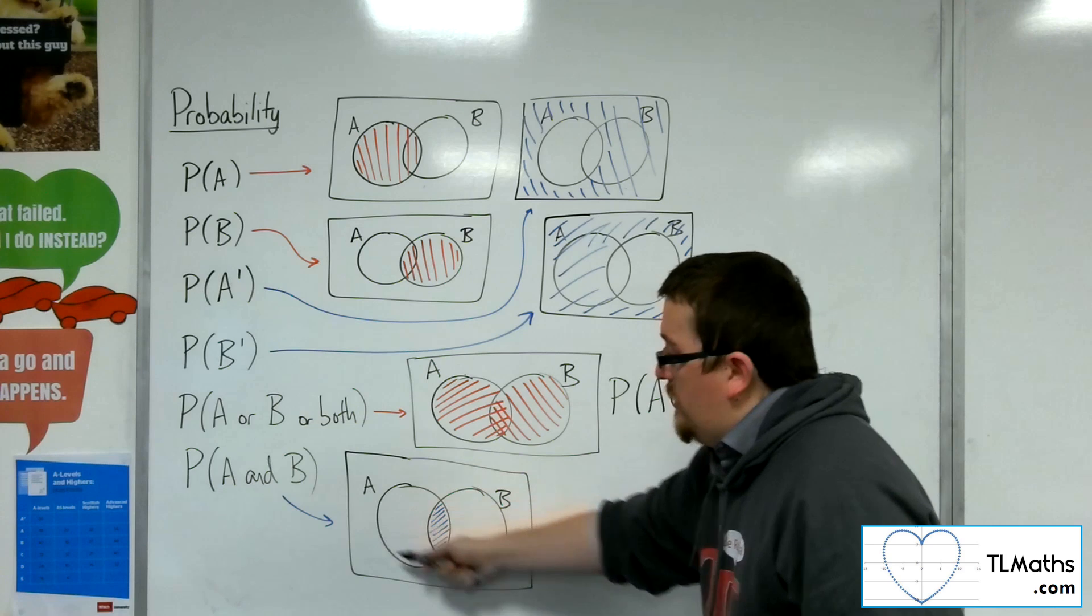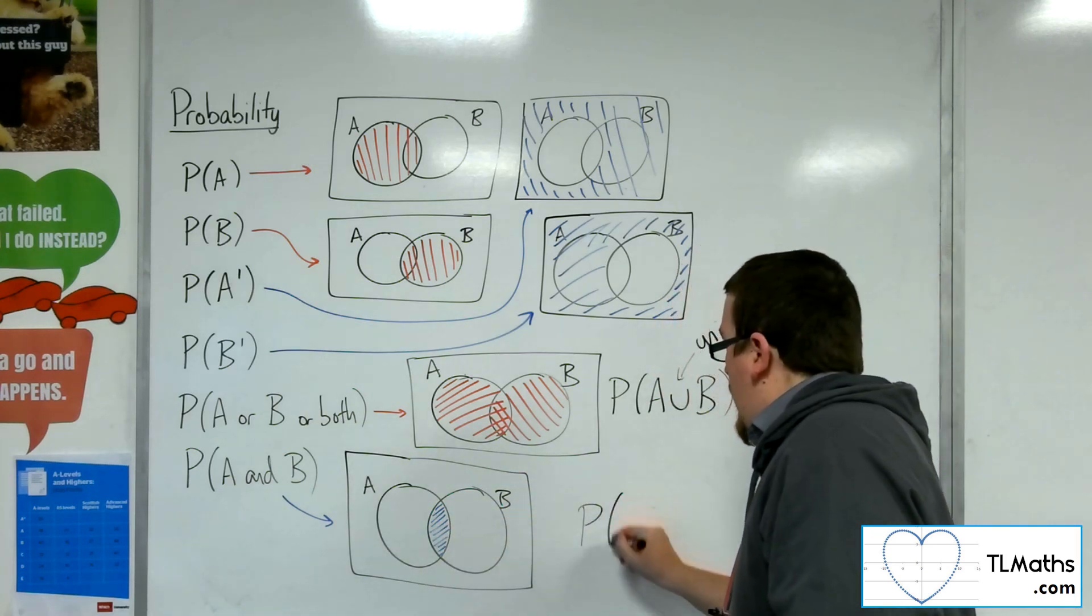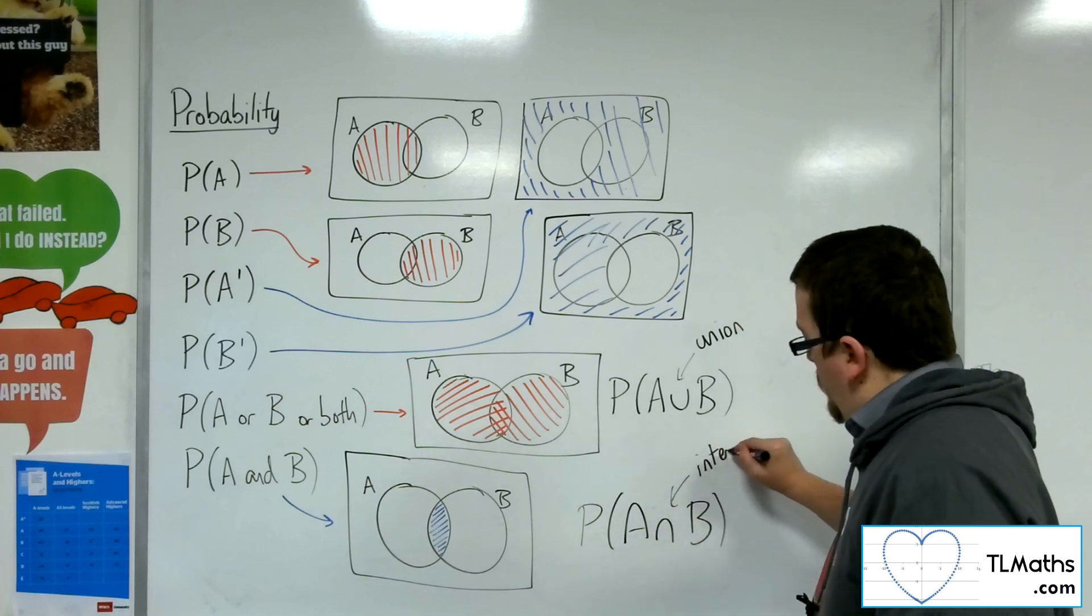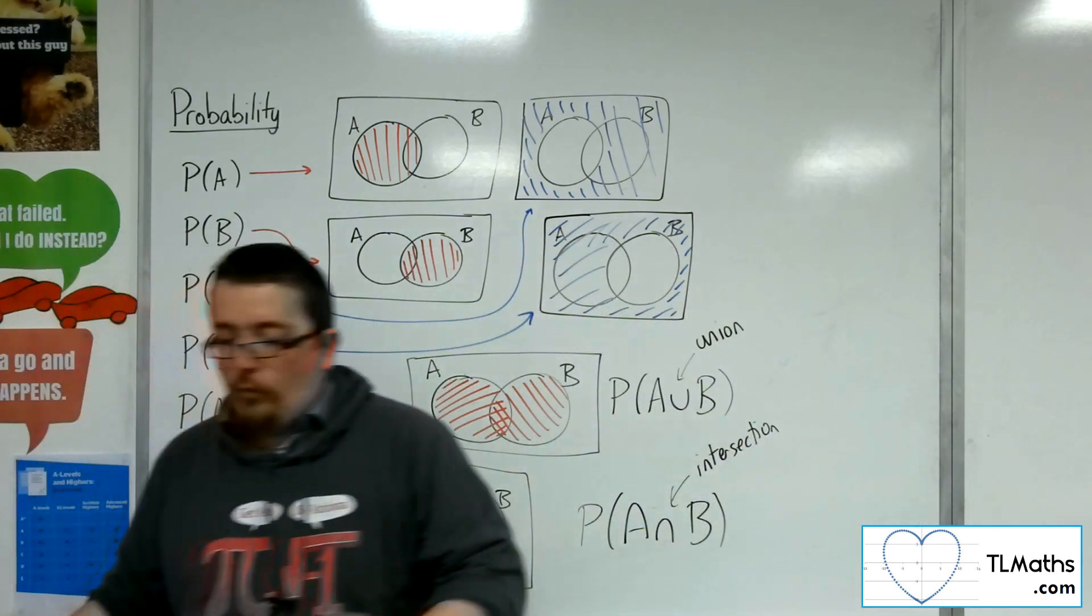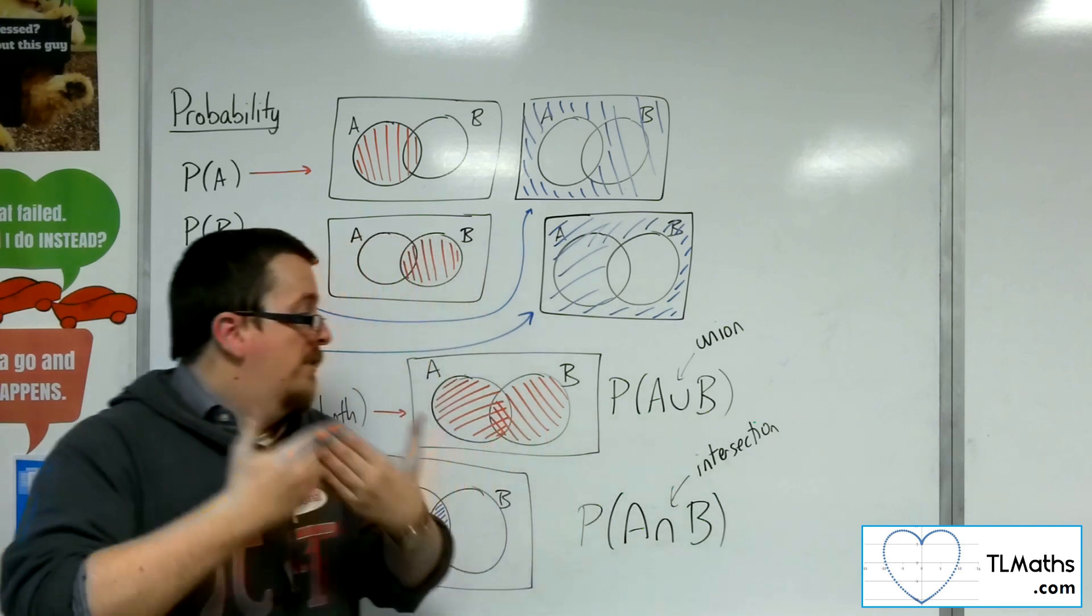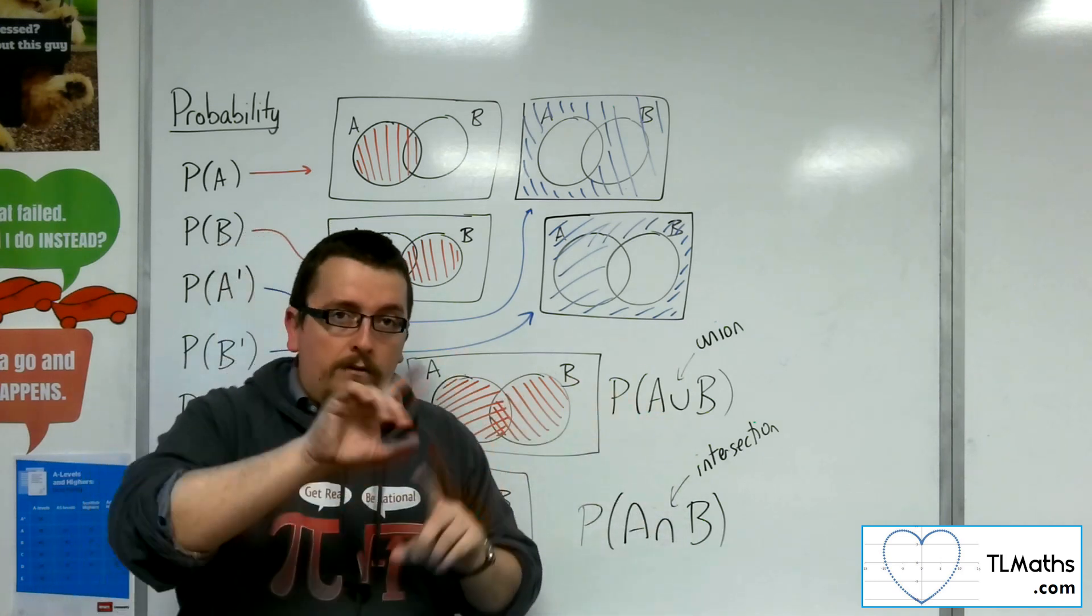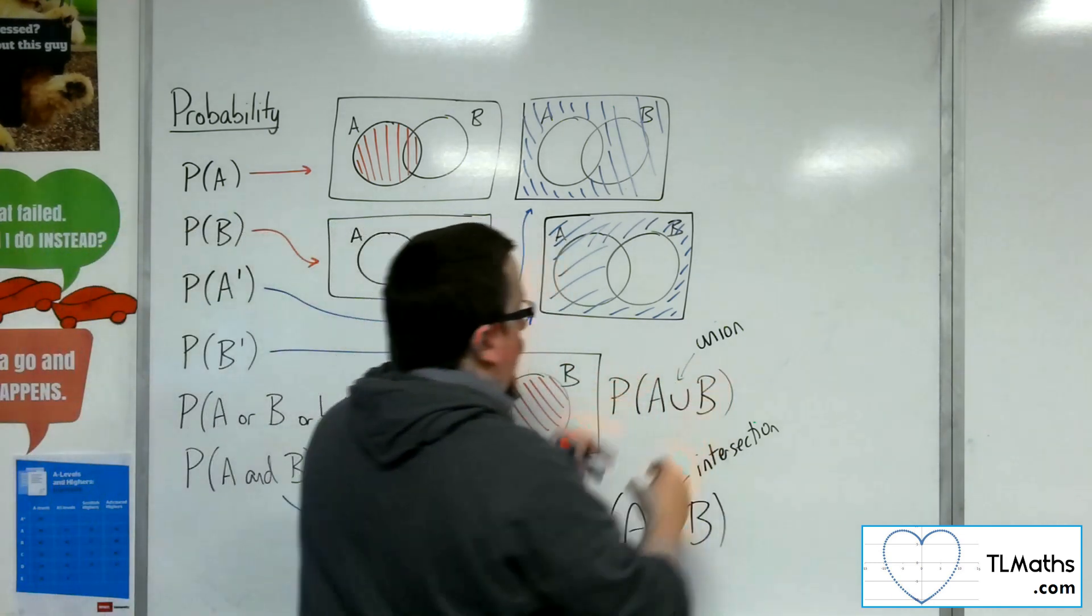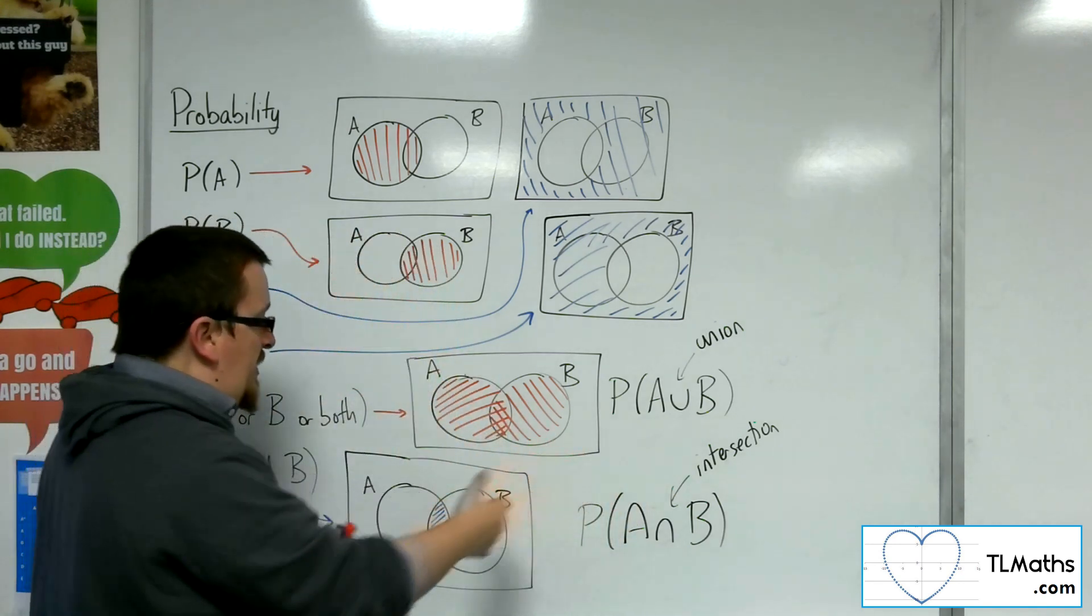Because this overlap that we have there, we represent as the intersection of A and B. So think of it as where the two circles overlap, where they intersect. That is where we use this ∩ shape. So it's a reverse symbol of that one upside down. So we can build up a formula for A union B using what we have here and that intersection.